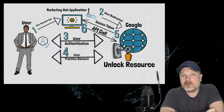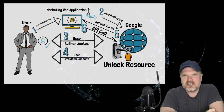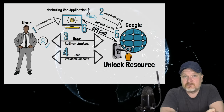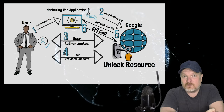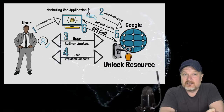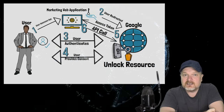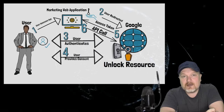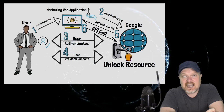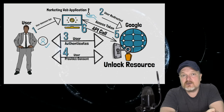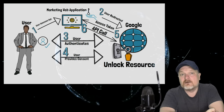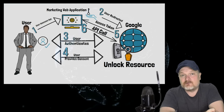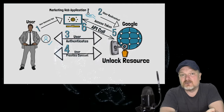The access token is like a key that must be sent with the HTTPS request made by the marketing web application to unlock specific access to the user's Google contacts — in our example, restricted to read-only access. Once the marketing web application has an access token, what matters is the token provided by Google. Through this access token, the app can now have read-only access to the user's Google contacts.